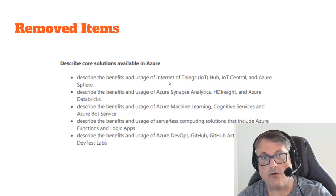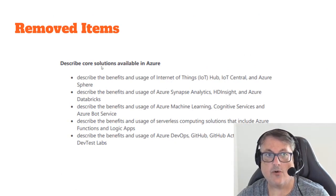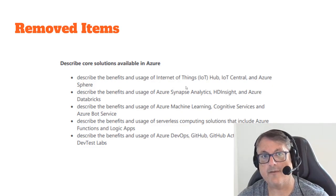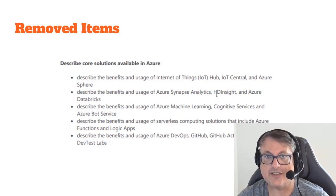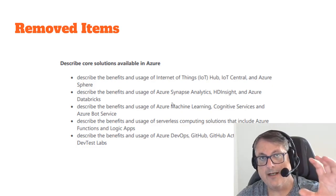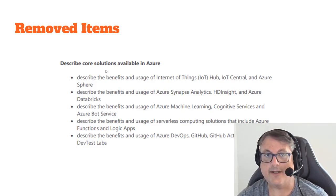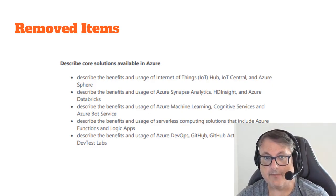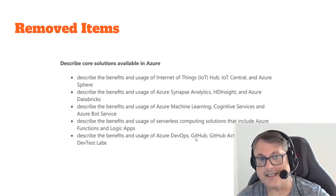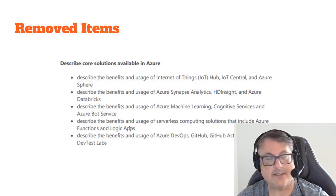The most significant announcement is that the whole section dealing with core solutions available in Azure has been removed from the exam. Internet of Things, Synapse Analytics, HD Insight, and Databricks — these are all advanced specific solutions within Azure, and they are no longer going to be covered. We're also not going to be talking about DevOps, GitHub, or DevTest Labs — all of that has basically been removed.